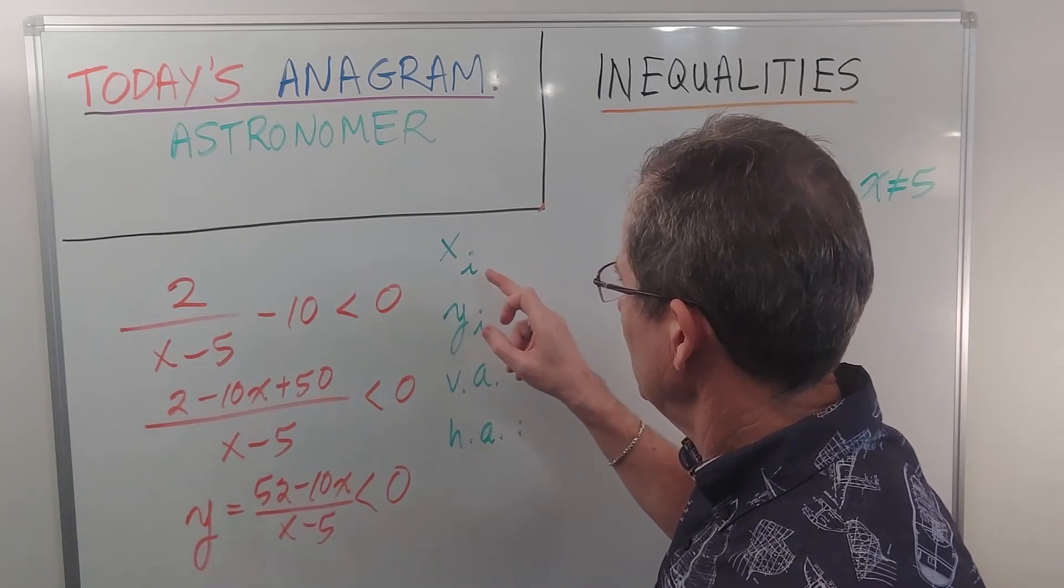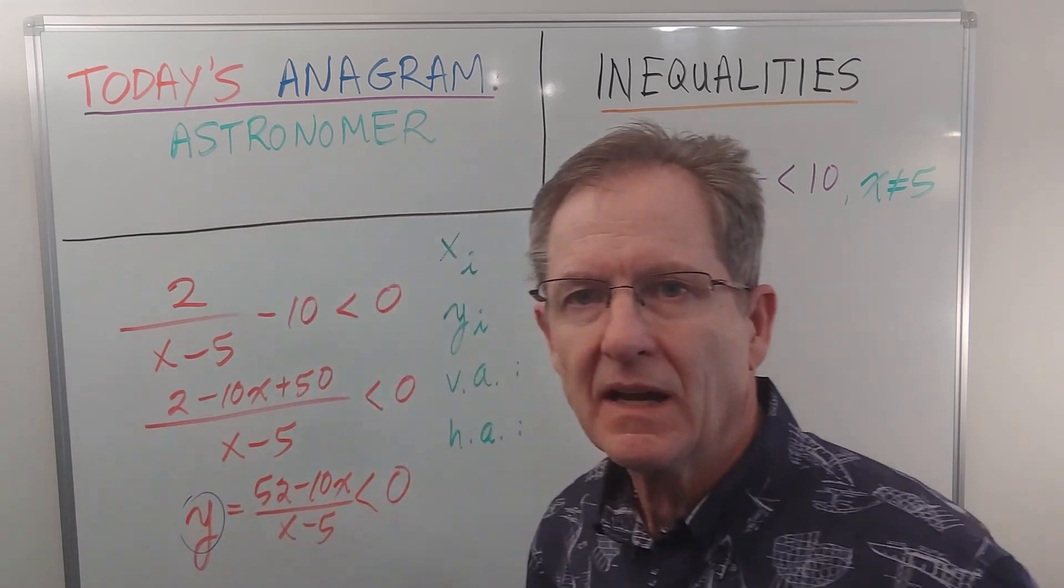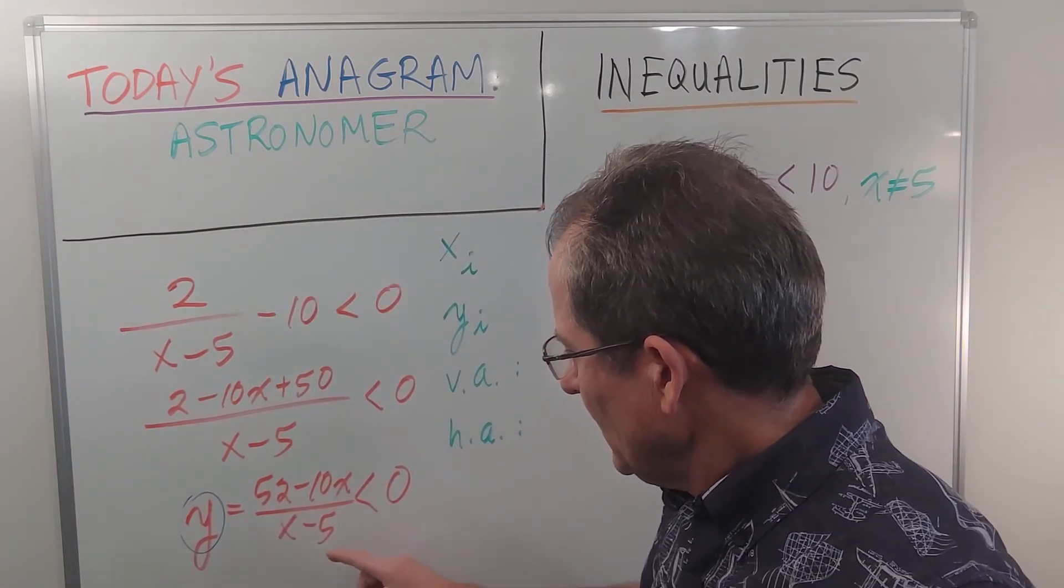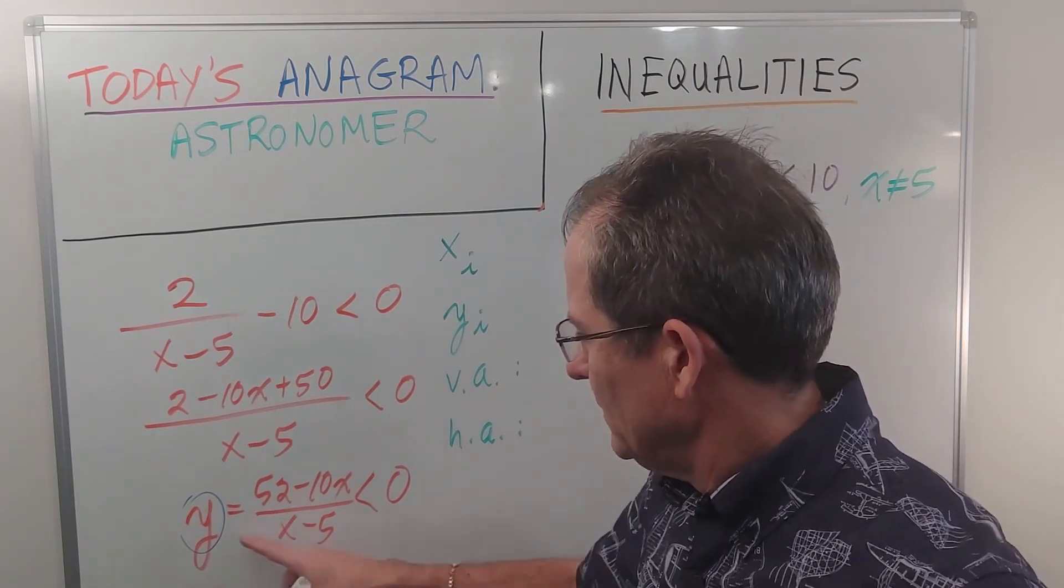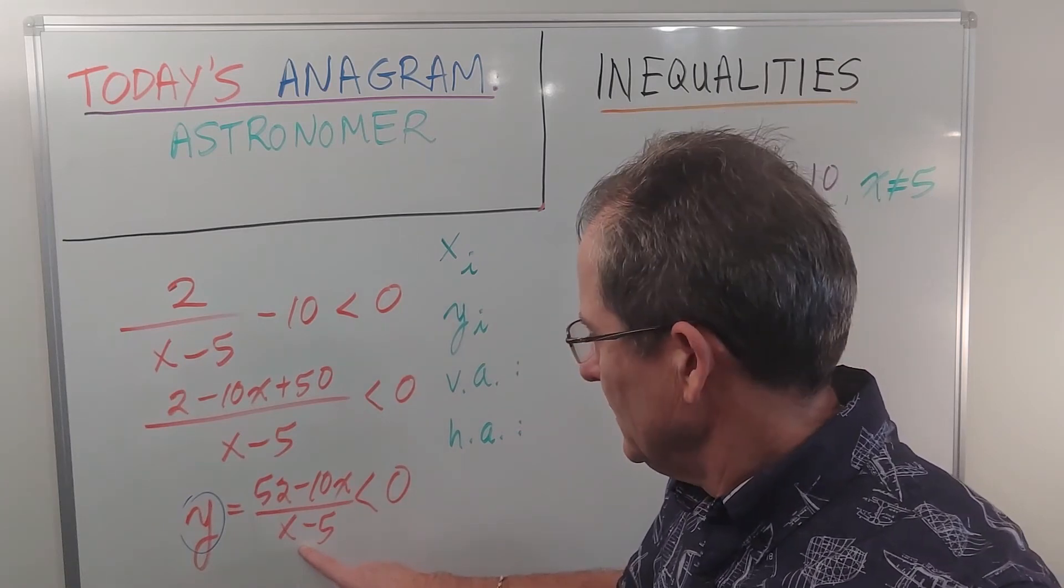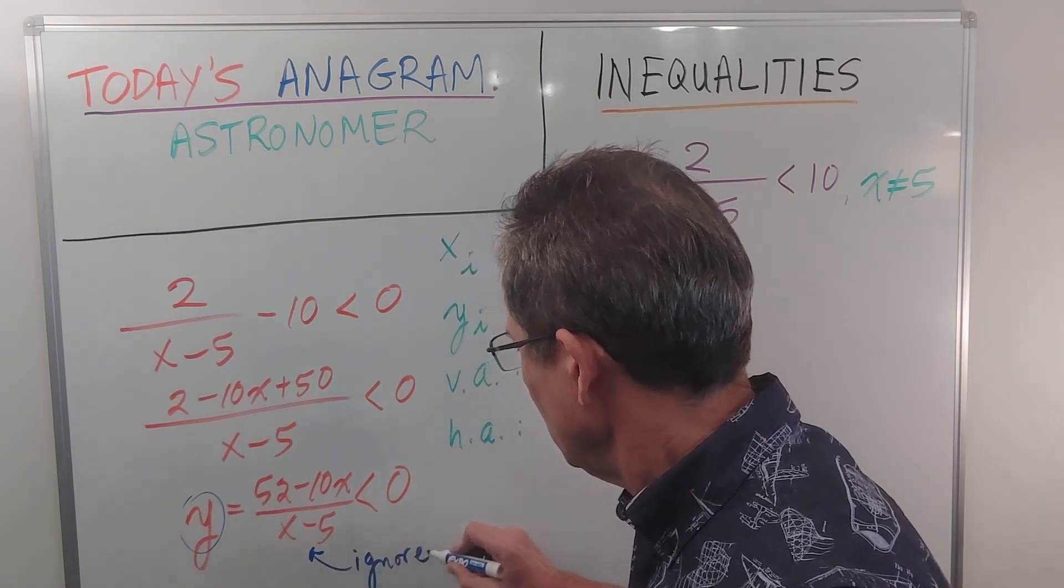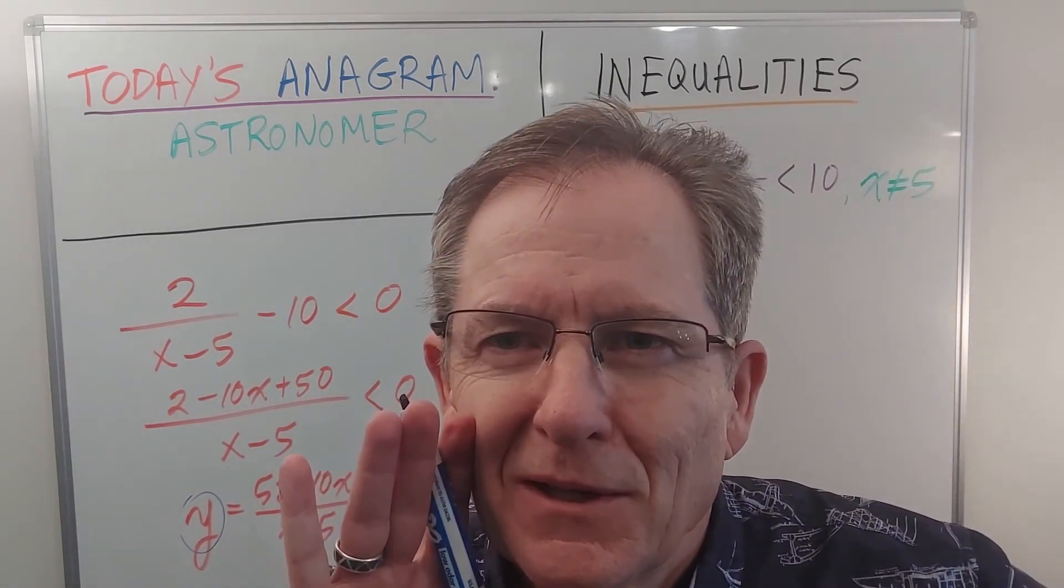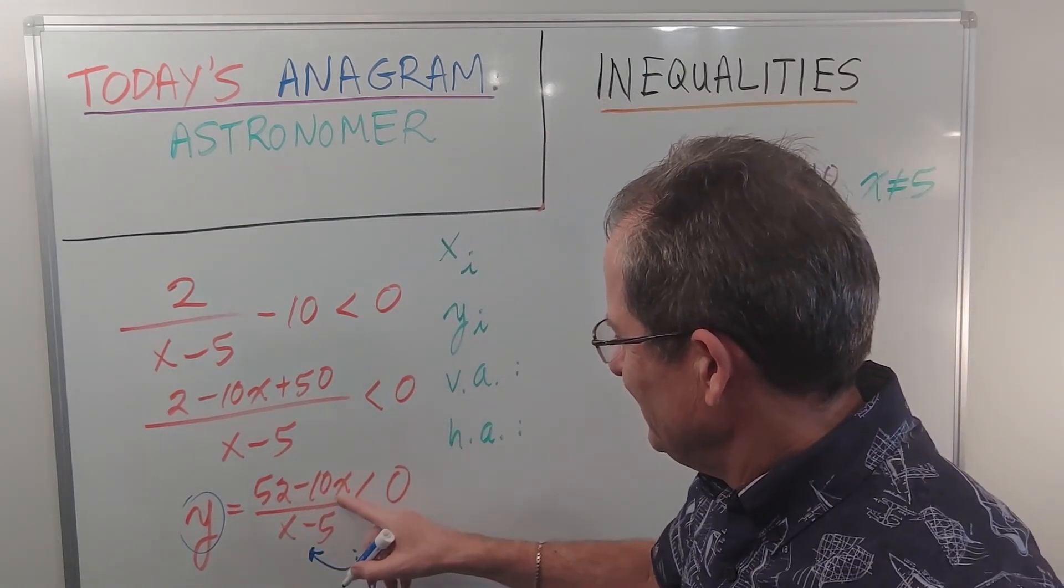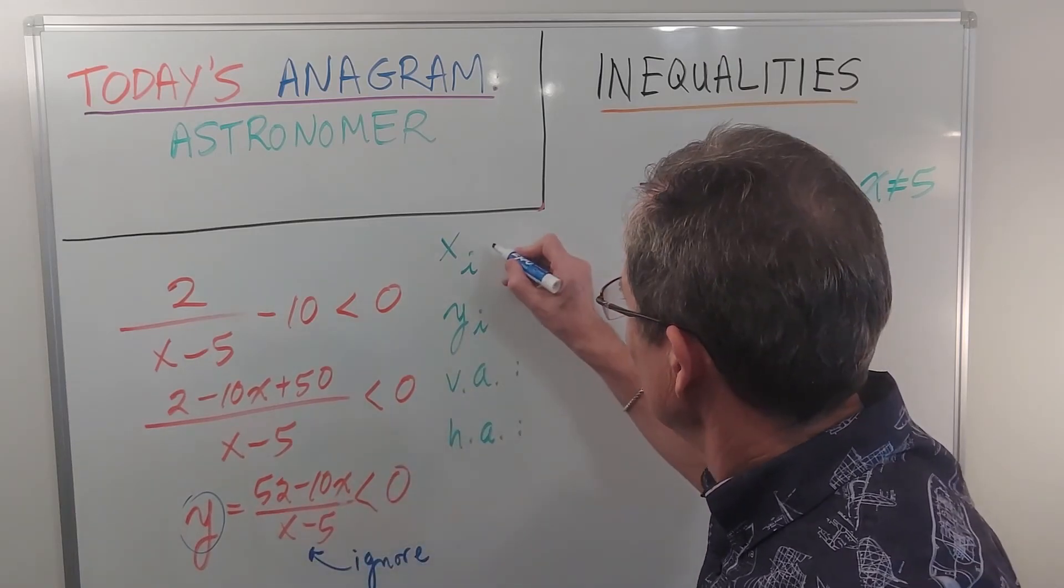To get the x-intercept, you imagine y equals zero because you're on the x-axis. So this expression must equal zero. Now the only way the denominator can make something zero is if it's plus or minus infinity, but those aren't real numbers. So you ignore the denominator. That cannot make it zero. So that would be 5.2. Because if that's equal to zero, x must be 5.2.